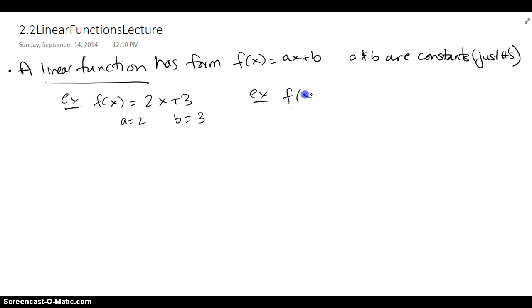Or if I have, let's say, f of x equals 5x, that's also a linear function, a is 5 and b is actually 0 because there is no b that you see. So you could imagine a big invisible 0 next to it.